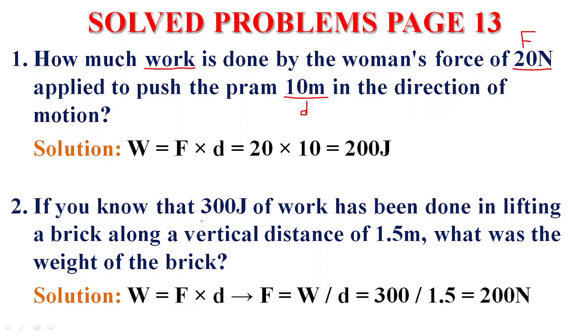Problem two: If you know that 300 joules of work has been done in lifting a brick along a vertical distance of 1.5 meters, what was the weight of the brick? So this is the application. Given W and D, find F. What is the weight, the force of the brick? W equals F times D, therefore F equals W divided by D, which equals 300 divided by 1.5 equals 200 newtons.